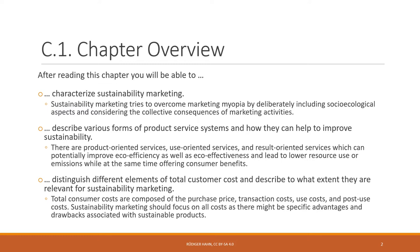You will learn that there are basically three different product service systems: product-oriented services, use-oriented services, and result-oriented services, which to different degrees combine products with services. These systems can potentially improve eco-efficiency and also eco-effectiveness, ideally lowering resource use or emissions while at the same time offering consumer benefits other than just selling a mere product.